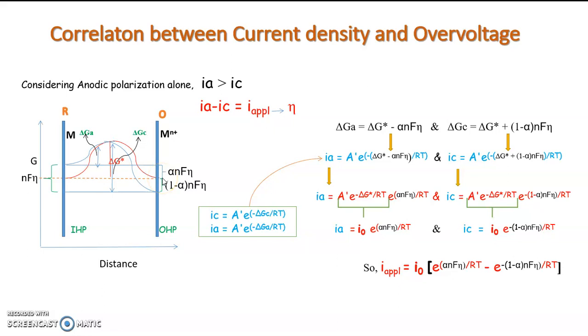And similarly, we can have the delta Gc. The shift from the equilibrium value can be 1 minus alpha into η, sorry, NFη.